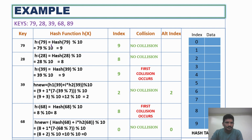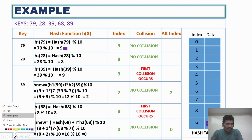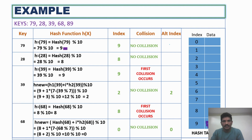For h(79): 79 modulus 10, the remainder is 9. Index 9 is free, so 79 is placed at index 9. There are no collisions at index 9, so 79 has been placed successfully.